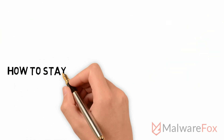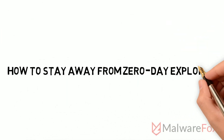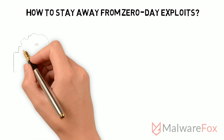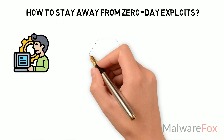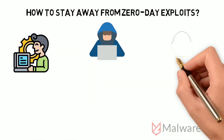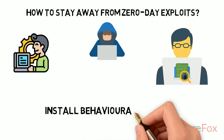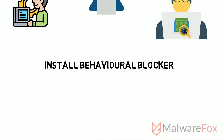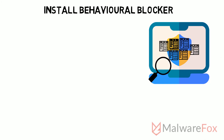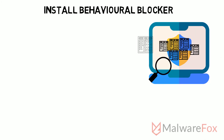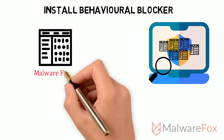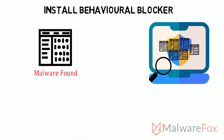How to stay away from zero day exploits. There are no immediate fixes available to resolve the exploit because the developer is still unaware of its existence. For better protection you should have a behavioral blocker installed on your system. It monitors the behavior of all programs. When a program takes action that matches the malware description it blocks that program, thus preventing the zero day attack.